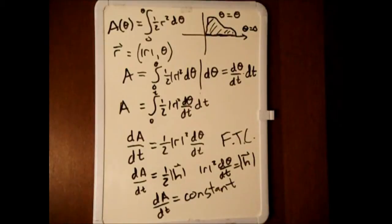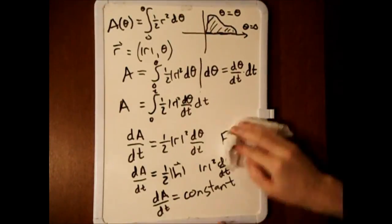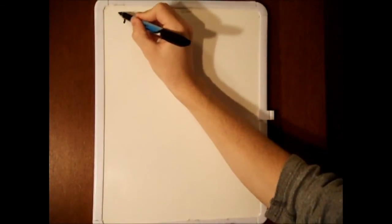We've actually just proved Kepler's second law. Because the rate at which the area swept out is constant, any equal time will sweep out an equal area.